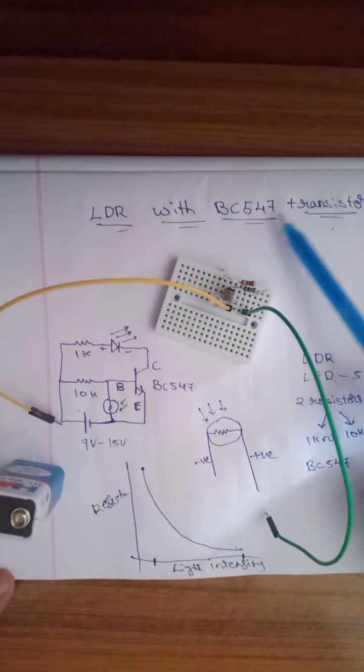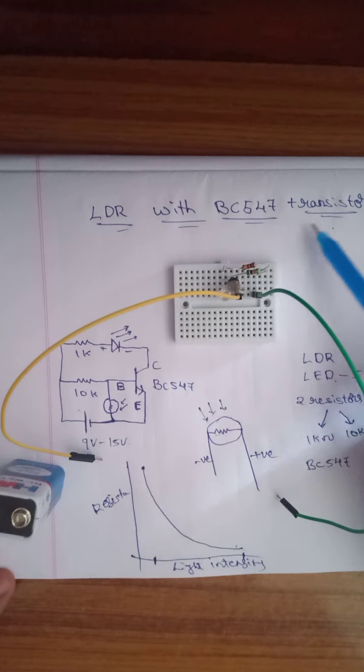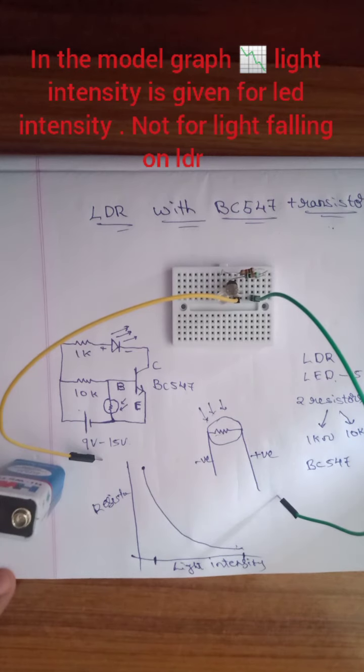Yes, BC547 is an NPN transistor. I think that you have completely understood the working of LDR with BC547 transistor. Thank you.